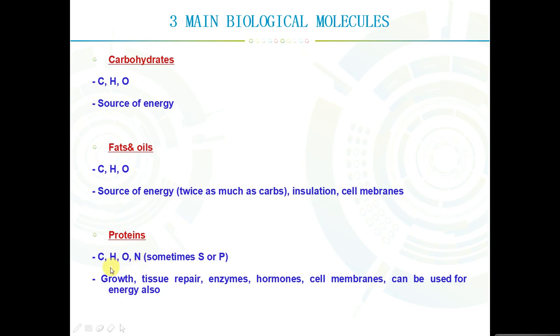And lastly, proteins. They've also got the three major elements of carbon, hydrogen and oxygen, but they also contain nitrogen and sometimes sulfur and phosphorus, depending on the type of protein. Proteins are extremely important for our bodies because they control growth, are used for tissue repair, used to make enzymes and hormones. They're present in cell membranes and can also be used for energy if the situation requires it to do so.